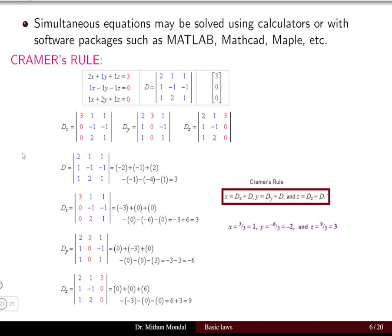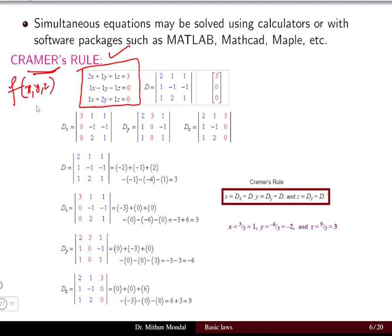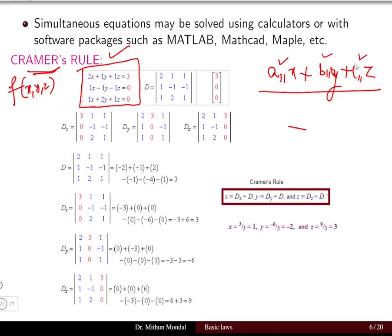An important technique for solving simultaneous equations is Cramer's rule, useful when a calculator is not available such as in an exam. To understand it, consider three simultaneous equations in variables x, y, and z, with coefficients a11, a22, a33, and so on, forming a system of three equations.